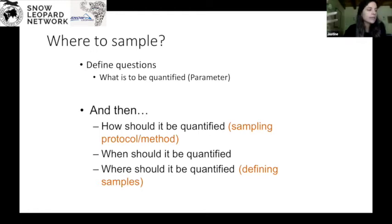So once you know, the how is trying to understand how will you sample in a way that is replicable and also reduces bias. When will you go out to quantify the species? And also, where should it be quantified? And this is really about defining your samples in order to reduce bias.